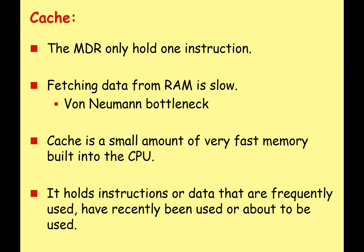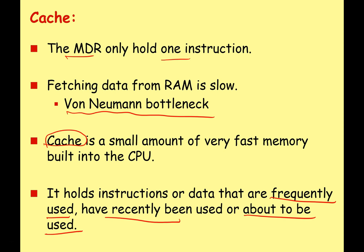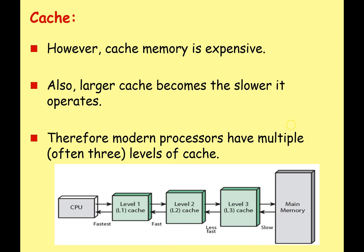Let's take a look at cache memory. We know that the memory data register, the MDR, only holds one instruction. We also know that fetching data from RAM is slow — we called that the von Neumann bottleneck in a previous video. So we have something in between our registers and our RAM called cache. Cache is a small amount of very fast memory built into the CPU. It's larger than the registers but much smaller than the RAM, and it's built onto the CPU. It holds instructions or data that are frequently used, have recently been used, or are about to be used, so that they can be fed into the CPU and processed very quickly. However, cache memory is expensive, which is why we don't just have lots and lots of cache — we still need to use RAM.